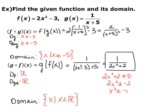For the domain, we need the domain of the inside function, which is f of x. f of x is just a parabola, so its domain is all real numbers. Then we find the domain of the final function, 1 over 2x squared plus 2. It's a rational function, so the denominator cannot equal 0. You end up with x squared equals negative 1, which isn't possible for real numbers, so that domain is also all real numbers. Both domains are all real numbers, so the final domain is all real numbers.